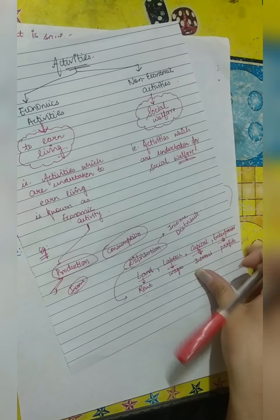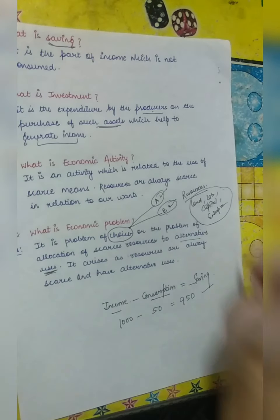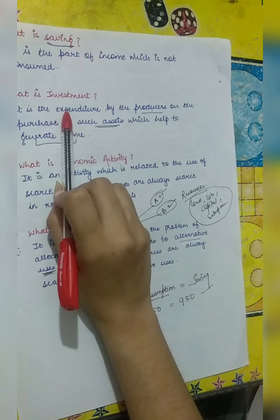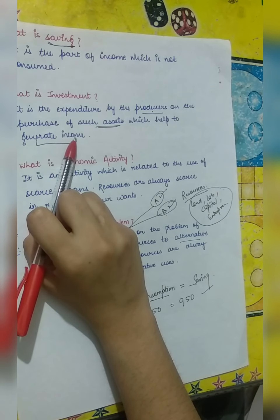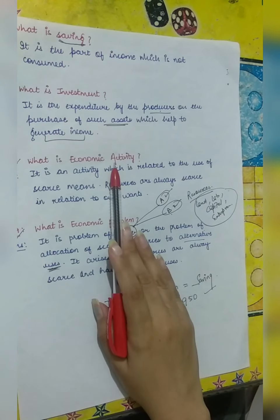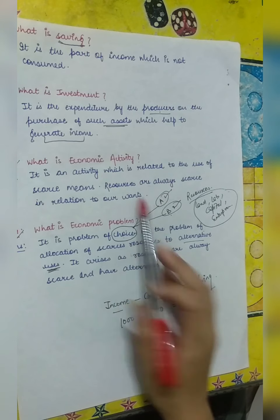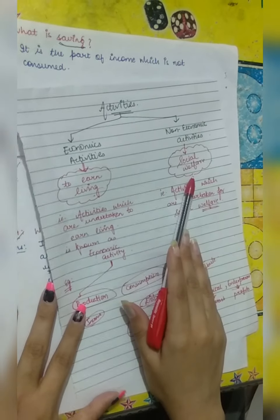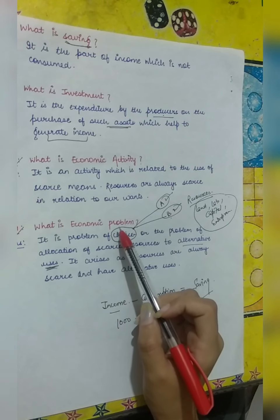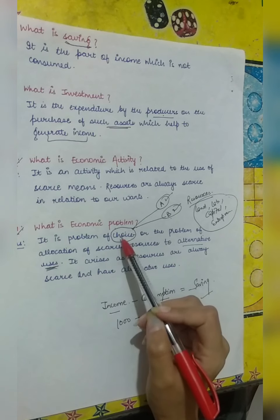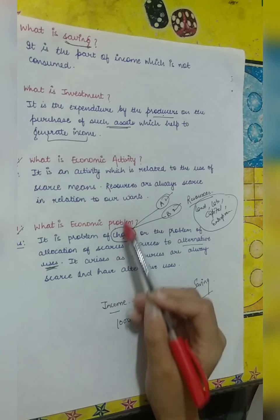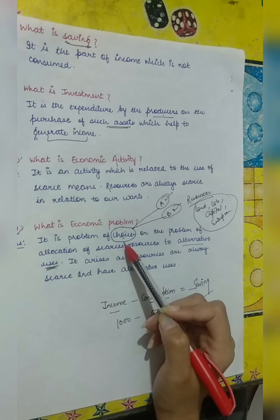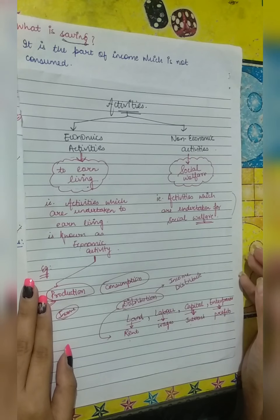Let's quickly revise today's class. Saving is income not consumed. Investment is expenditure on assets for the generation of income. Economic activity is undertaken to earn a living. Non-economic activity is done for social welfare. Economic problem is the problem of choice due to limited resources and alternative uses. With this, the definition section is complete. Tomorrow we will start a new topic. Thank you.